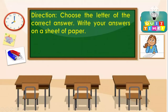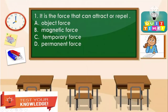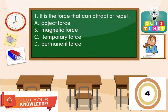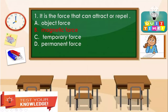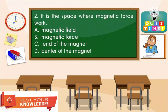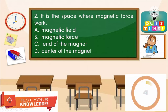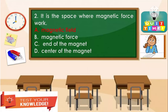Direction: Choose the letter of the correct answer. Write your answer on a sheet of paper. Item 1: It is the force that can attract or repel. A. [option], B. Magnetic force, C. Temporary force, D. Permanent force. The correct answer is magnetic force. Item 2: It is the space where magnetic force works. A. Magnetic field, B. Magnetic force, C. N of the magnet, D. Center of the magnet. The correct answer is letter A — magnetic field. Item 3: These are common artificial magnets that keep their magnetism for a long time. A. Bar magnets, B. Natural magnets, C. Artificial magnets, D. Permanent magnets. The correct answer is letter D — permanent magnets.